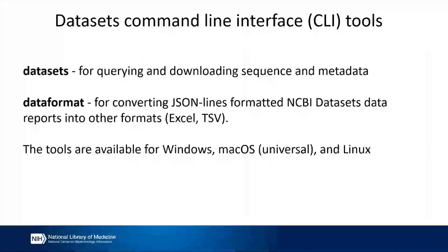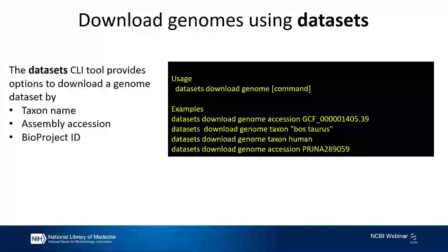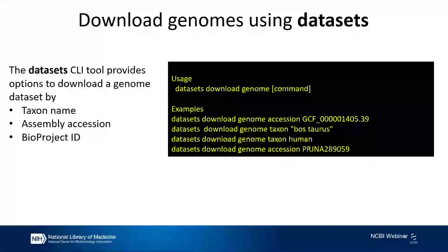Datasets actually has two command line tools. The first one is Datasets, for querying and downloading sequence and metadata. We also have a dataformat tool for converting that JSON lines file into TSV or Excel. Our tools are available for Windows, Mac, and Linux. For the command line, you can use the Datasets tool to download data by taxon name, by assembly accession, or by bioproject ID. The command is simply 'datasets download genome' and then accession, taxon name, or bioproject ID. You also have options to exclude or include different files.